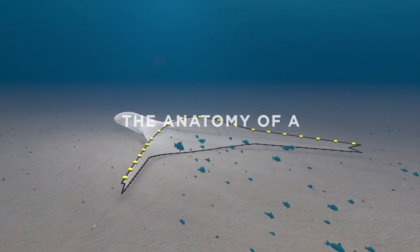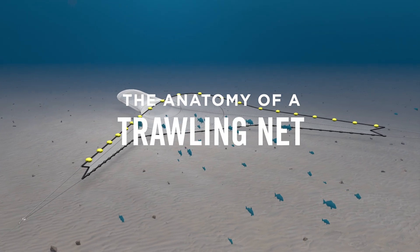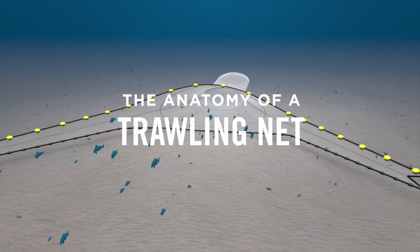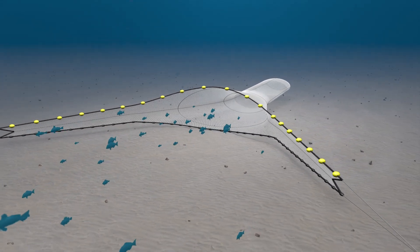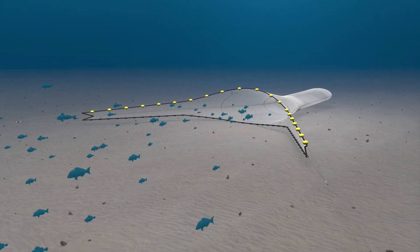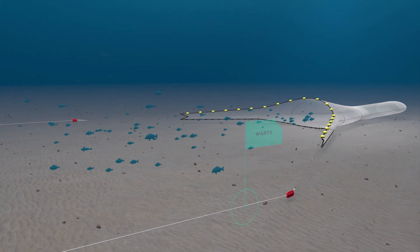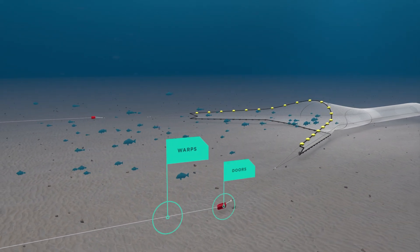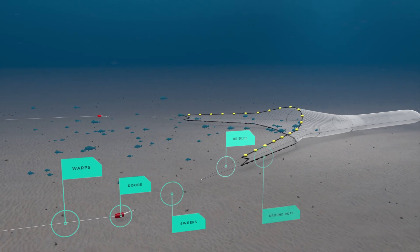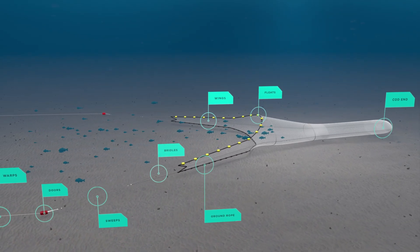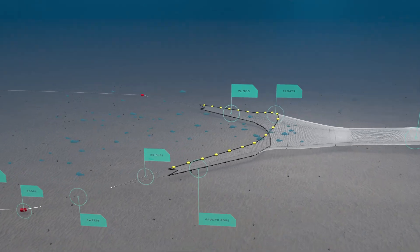Trawling nets are highly technical pieces of equipment designed to be efficient, effective and have limited impact on their surroundings. A trawling net is made up of several components, each with a specific purpose. There are warps, doors, sweeps, bridles, the ground rope, floats, wings and the cod end. Let's dive into what each of them do.